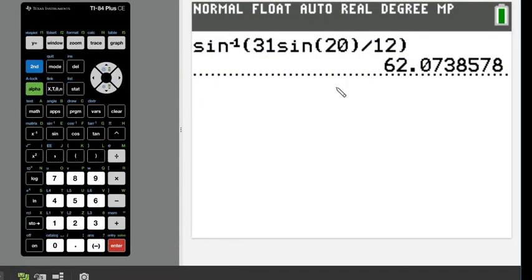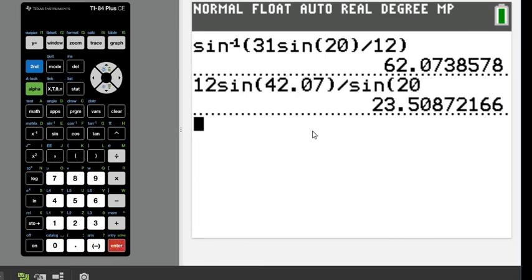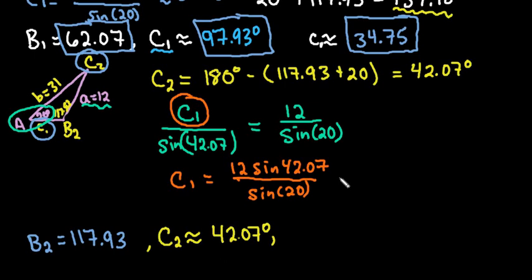And again, we would plug this into our calculator. So since I didn't show how to do it on the last one, I'll just quickly show you. We would just do 12 sine 42.07. Close the parentheses. Divided by sine of 20. And hit enter, and we get 23.51. This is a side relationship, 23.51. So C2 ends up being 23.51.